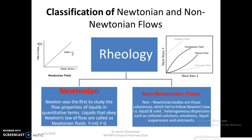Non-Newtonian flow refers to substances that fail to follow Newton's law. Liquids or solids in heterogeneous dispersions — like pharmaceutical suspensions, colloidal solutions, emulsions, and ointments — do not obey Newton's law. When viscosity changes after shear stress is applied, the system is called non-Newtonian. Non-Newtonian flow is divided into three systems: plastic flow, pseudoplastic flow, and dilatant flow.